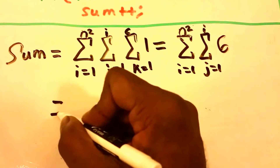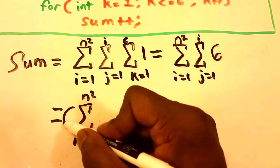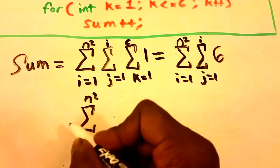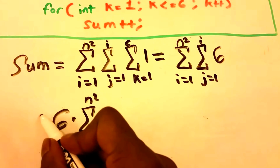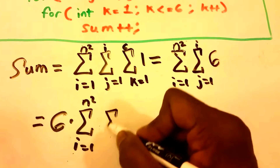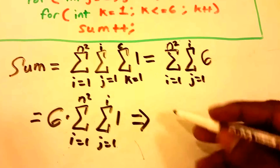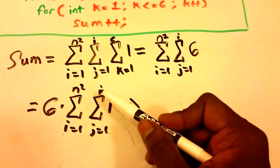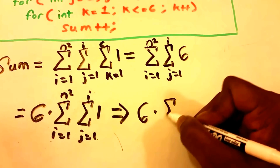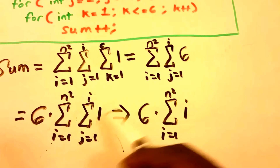So let's simplify a little bit more. We now get the summation from i equals 1 to n squared, and we pull out that 6, giving us times 6. Then we have the inner summation from j equals 1 to i of 1. Applying the same formula, this equals whatever that top variable is — which is i. So we now get 6 times the summation from i equals 1 to n squared of i, meaning our second for loop just became i.